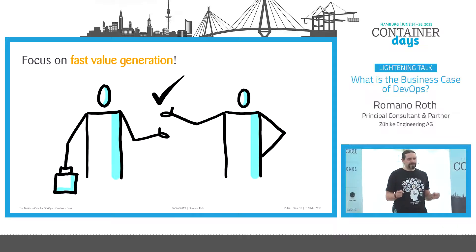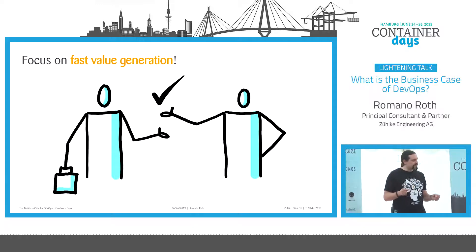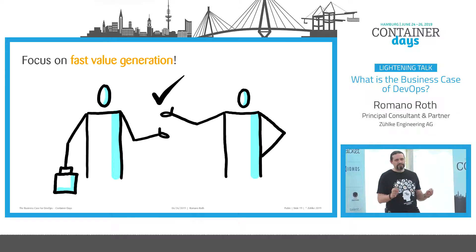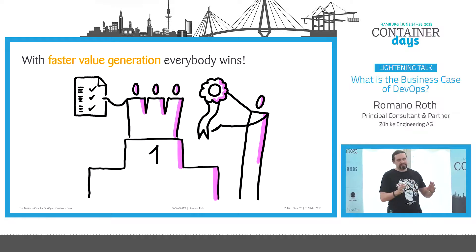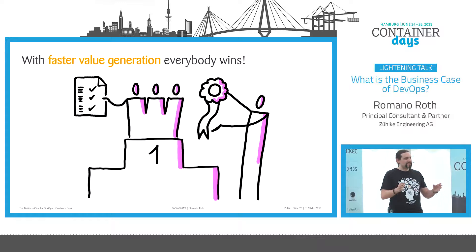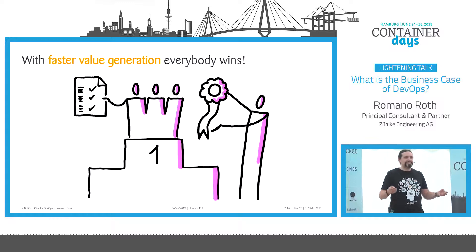You now have the tool to convince your decision maker about the DevOps transformation so that you can get the money for it. It is essential to focus on fast value generation, because not only your project or product will be successful — the whole enterprise will be successful. You will have happy customers who are happy with your features and the speed at which they receive them, and they will pay you money for that. With DevOps, everybody will win. Thank you very much.